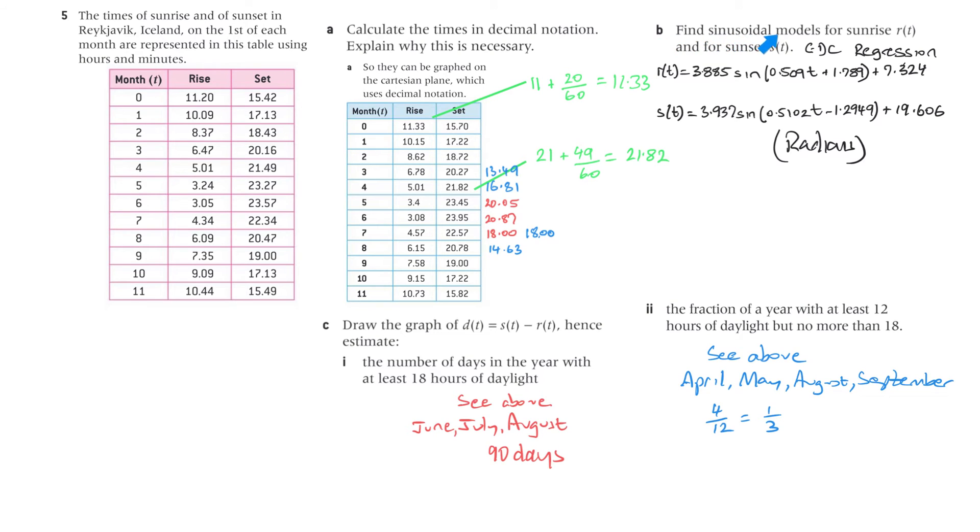B, find sinusoidal models for sunrise RT and for sunset ST. Now we use GDC regression again. So these, we put this in the table, we put this in the table on your GDC and then we come up with this. And remember this is the form that the calculator gives and it's in radians. So we've got 3.885 for A, B is 0.509, C is 1.789 and the vertical shift D is 7.324. That's for the rise. The sunset is the same and we've got different numbers there but they're in radians, we need to keep that in mind using the GDC regression function.